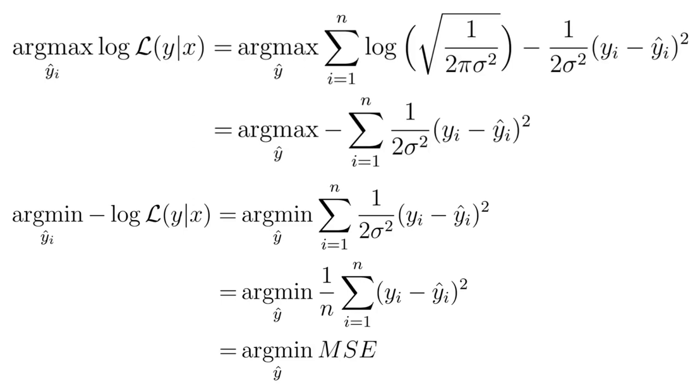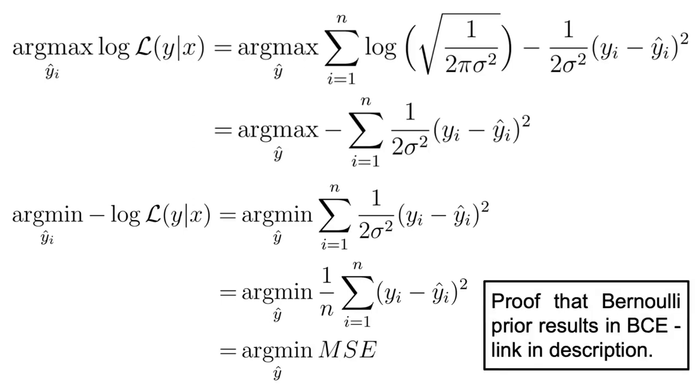Also, in a similar way, one can show that by assuming that the error is distributed using a Bernoulli distribution, again a more natural selection for binary classification problems, we can obtain the binary cross-entropy loss. However, I won't prove this in this video, since I am afraid that if I were to do that, this video would become both too math-heavy and too long, so I will just add a link into the description for those of you that are also interested in exploring that proof.